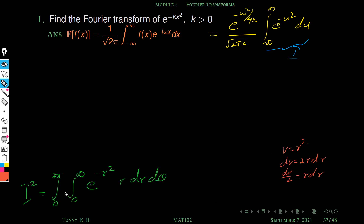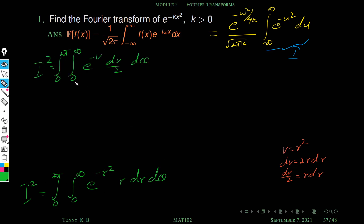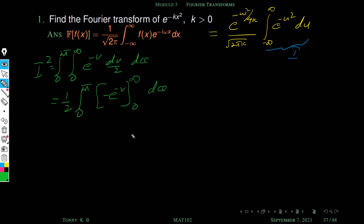To evaluate this integral we use the substitution v equals r square, so dv equals 2r dr, giving r dr equals dv by 2. When r equals 0, v equals 0; when r equals infinity, v equals infinity. So I squared equals the integral from 0 to 2 pi and 0 to infinity of e raised to minus v times dv by 2 d theta. Taking 1 by 2 outside and integrating e raised to minus v gives e raised to minus v divided by minus 1. When v equals infinity this is 0, and when v equals 0 this is 1.